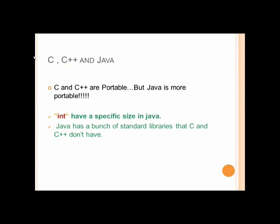In Java, int is 32 bits. While C and C++, the size of an integer varies depending on a platform and compiler. The second example, Java has a bunch of standard libraries that C and C++ don't have.